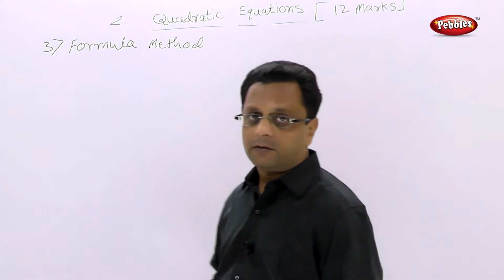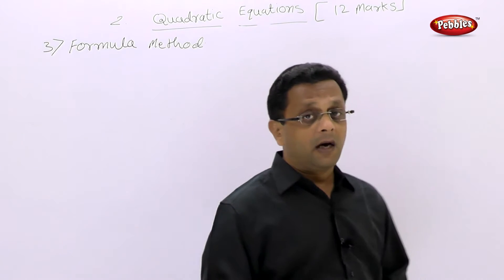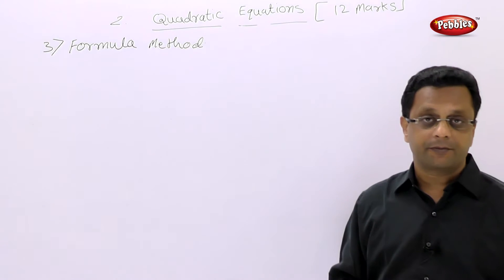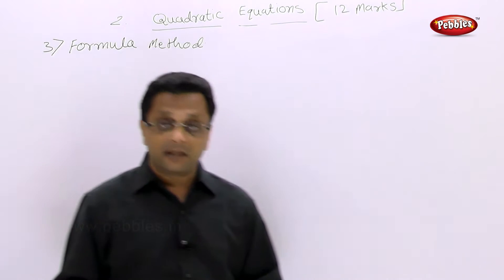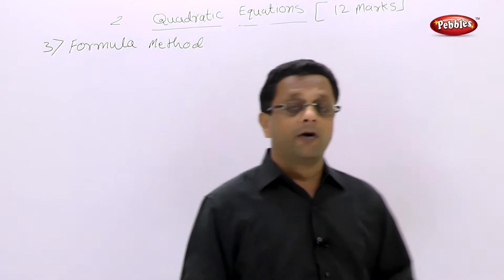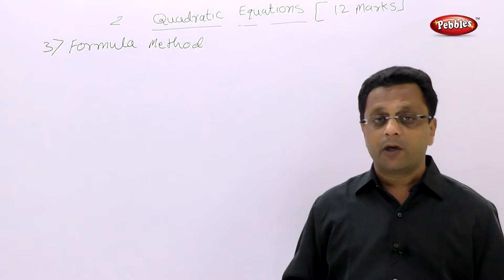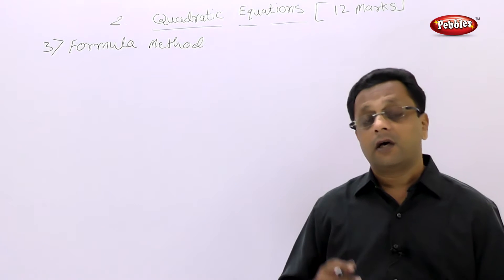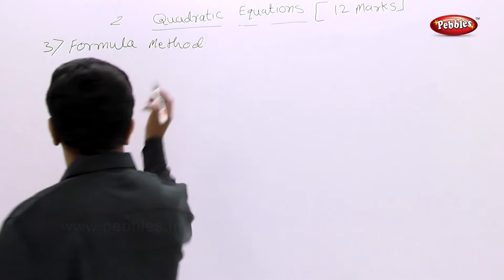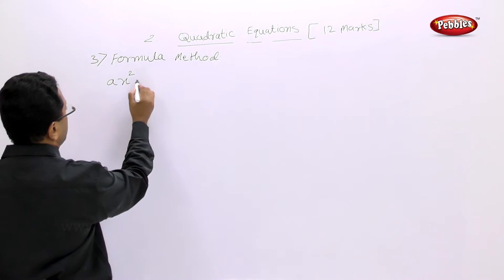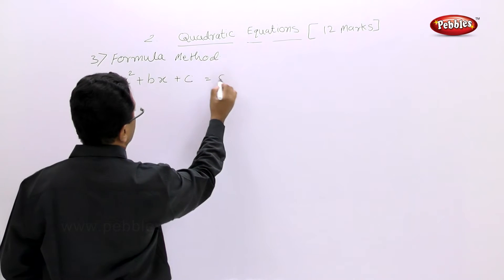The sums for this method are very easy, but first we will see how this formula is derived. This formula is derived by the ancient Indian mathematician Siddhacharya, and so it is called the Siddhacharya formula. Let us see how this formula is derived and after that we will see its application. We start with the quadratic equation Ax² + Bx + C = 0.